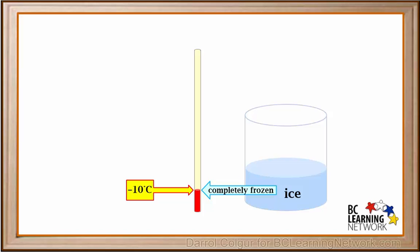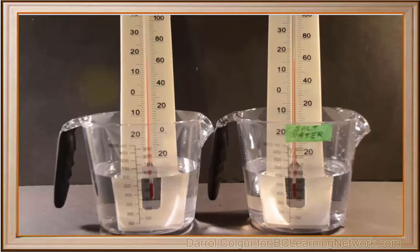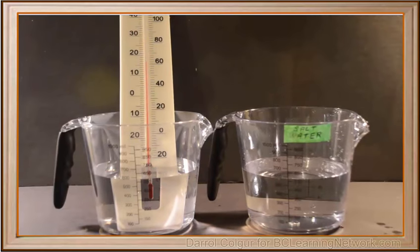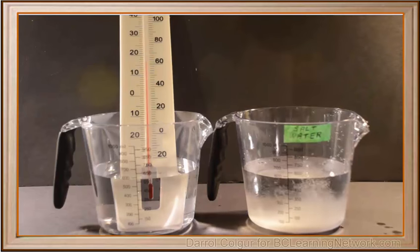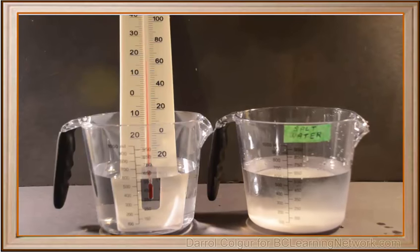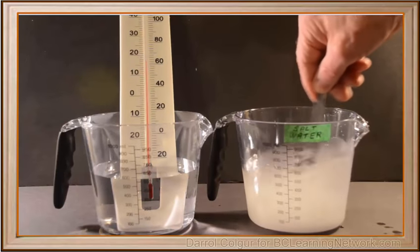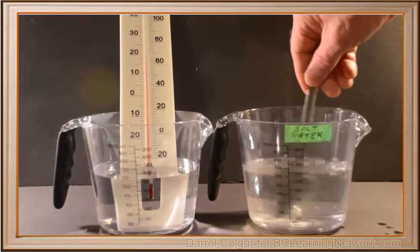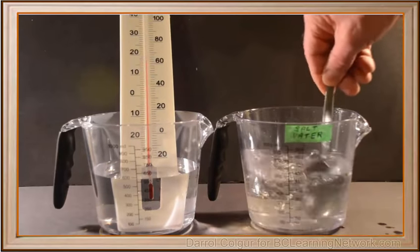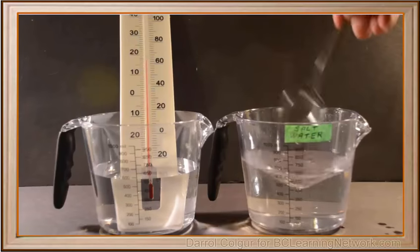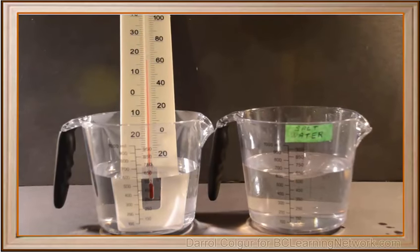Let's see how adding a solute to water affects its freezing point. Any solute will do, but here we'll try salt. We'll start with two containers of pure tap water. We've labeled the right container as salt water. We'll take the thermometer out and add three spoons of salt, then stir the solution to dissolve it. After stirring for a while, there was a little bit of undissolved salt left on the bottom, so we'll keep on stirring it until it's all dissolved. After that, we'll put a thermometer back in the salt water container and put both containers into a deep freeze for a few hours.